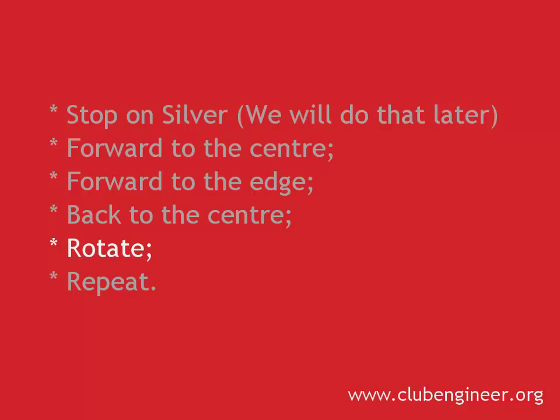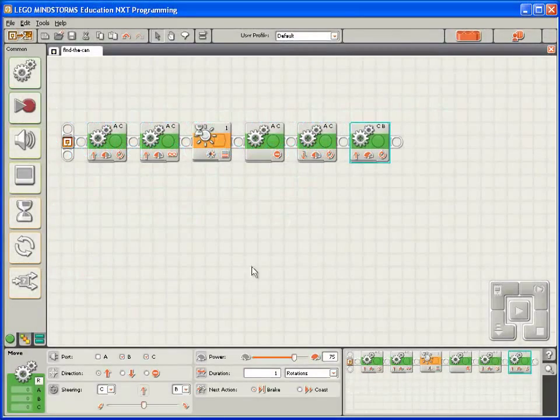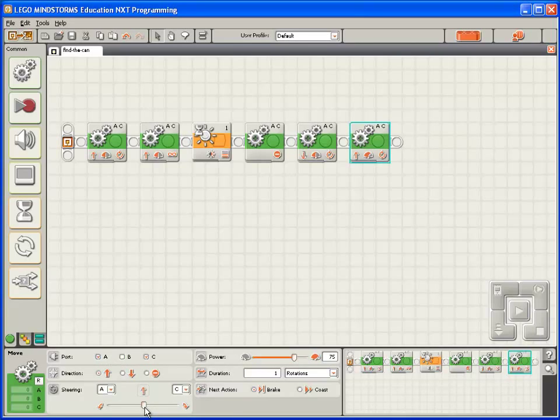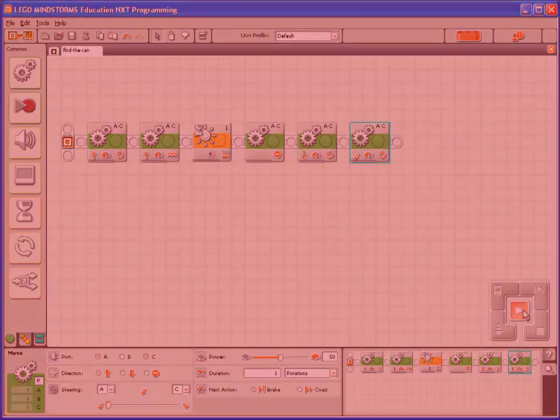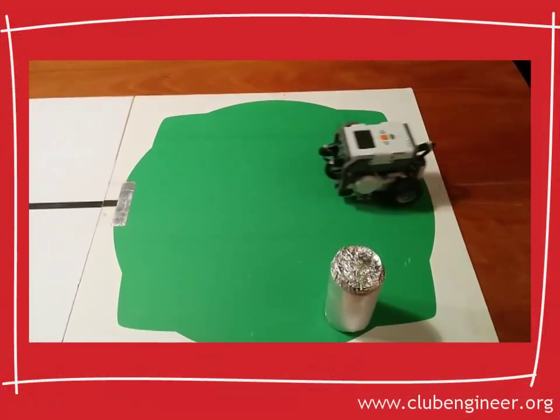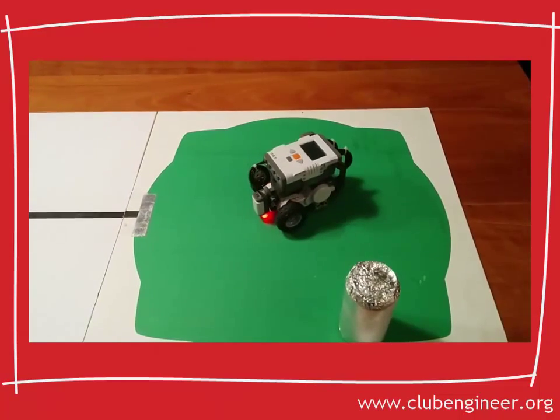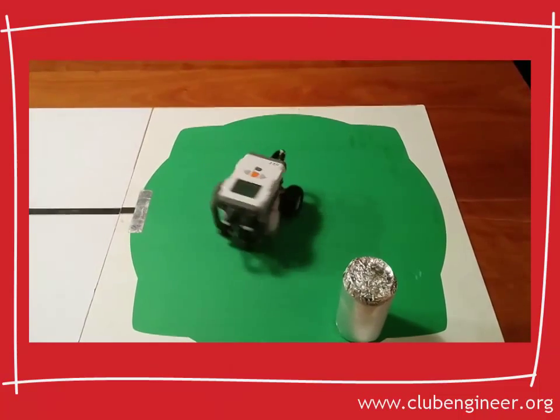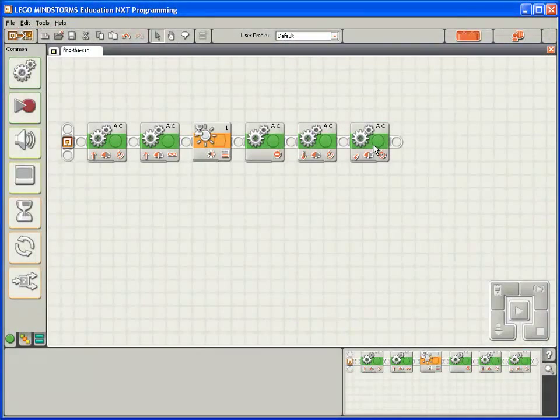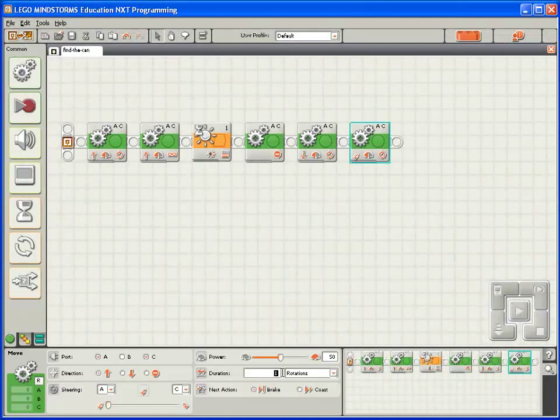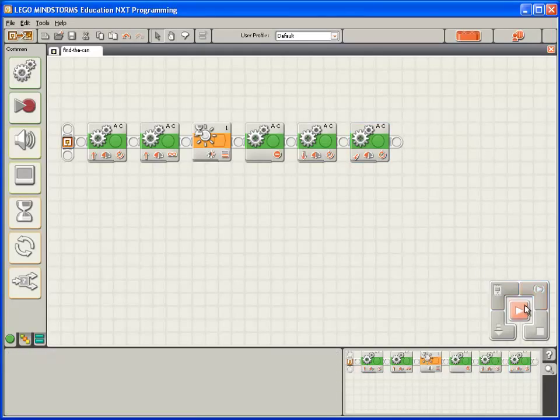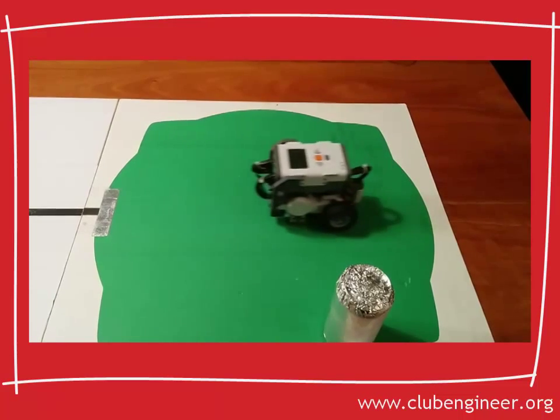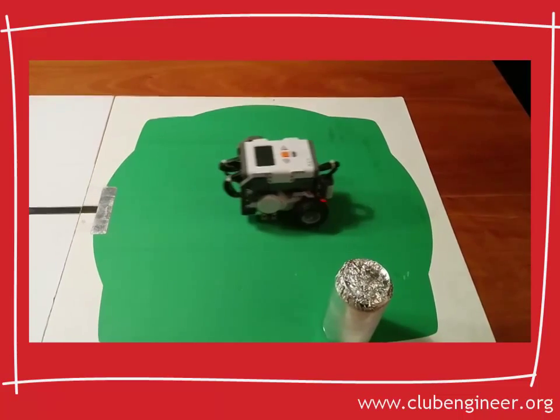Now we want the robot to rotate slightly on the spot. So we'll drop a move block down. And we'll crank up the turn ratio right up as high as it will go. That will make the robot rotate on the spot. We'll set the power to 50. We'll compile, download and run. And oh dear, that's going way too far. So let's have a think. One rotation is way too much. So let's perhaps try 0.2. Compile, download, run. Ah, 0.2 is looking pretty good.